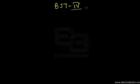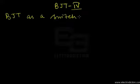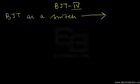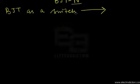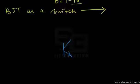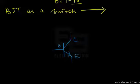Welcome to tutorial part 4 on BJTs. Today we're going to discuss how to use a BJT as a switch or switching element. In order to understand the operation of a BJT as a switch, it's quite important to focus on the diagram. This is an NPN type BJT — you can identify that by the arrow direction — with the base, collector, and emitter terminals.